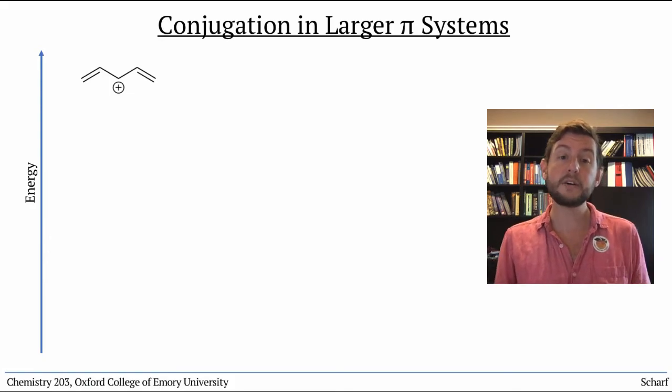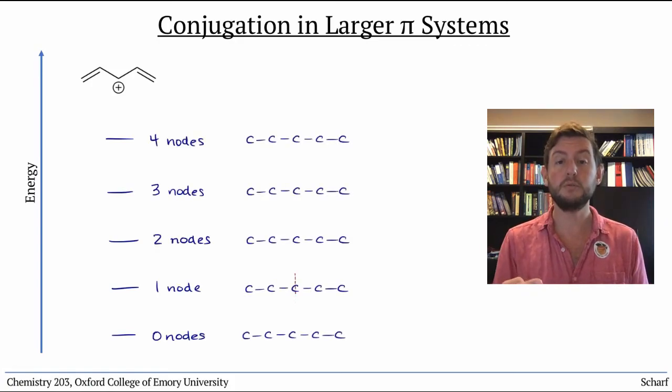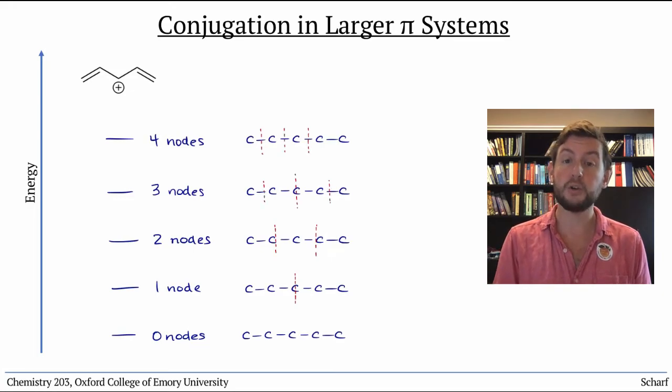We know that there are five carbon atoms, so we have five pi molecular orbitals with zero, one, two, three, and four nodes.